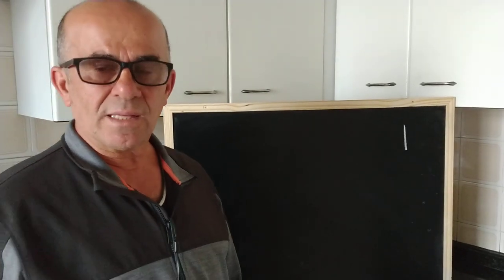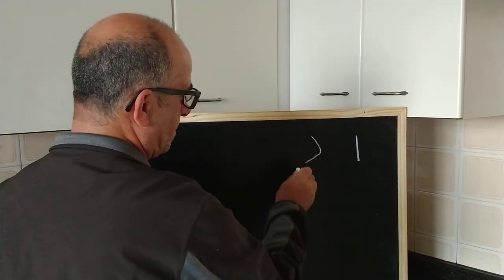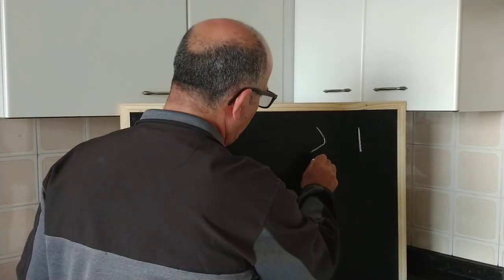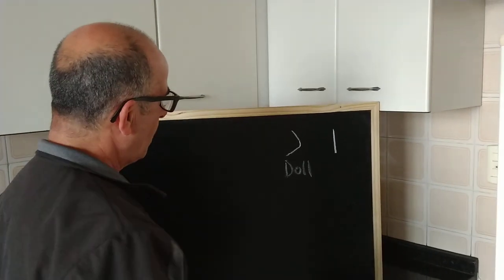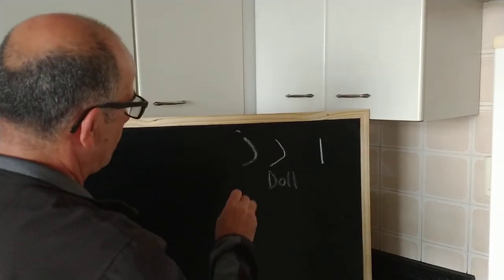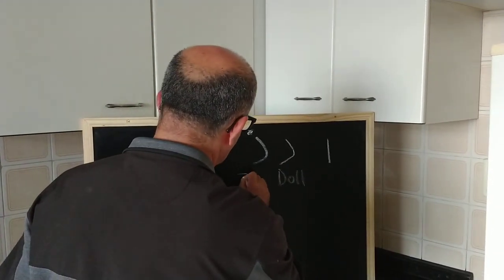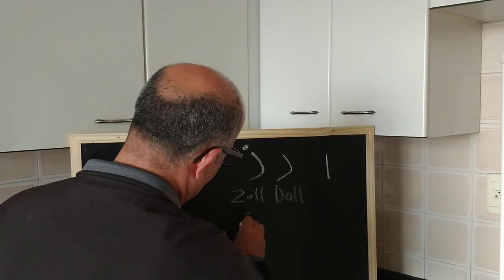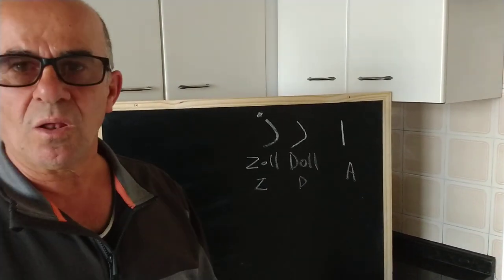The second letter is Dal — D. And of course Zol, which is Z. So this is Dal and Zol.